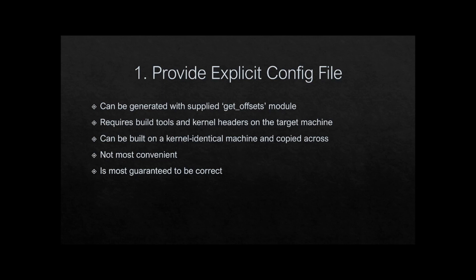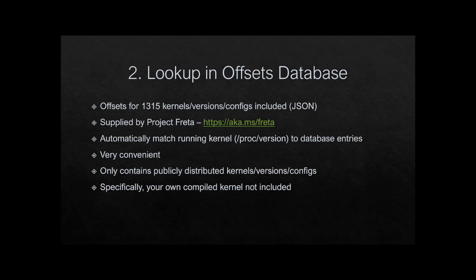Running the getoffsets module does require a toolchain and kernel headers. If the configuration file isn't there, the library looks up the kernel version in the offsets database, which currently has 1315 kernels and their offsets, kindly supplied by Project Frita. We take the kernel version, look it up, and if it's there pull out the offsets. This works well for publicly distributed kernels, but not for self-compiled ones. If it's in the database it's highly likely to be accurate — a quick and reliable method.